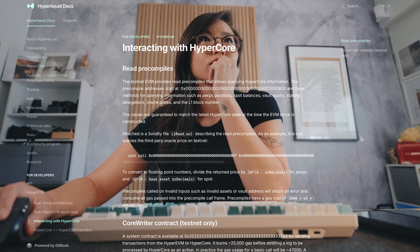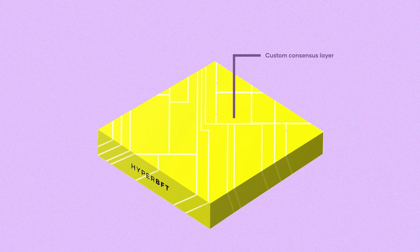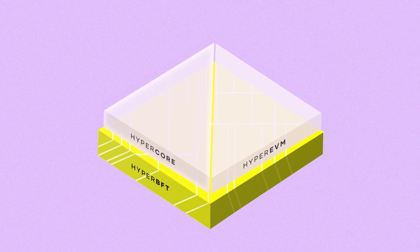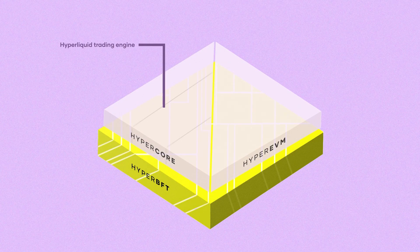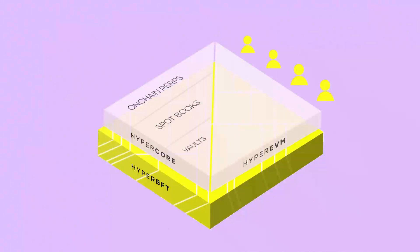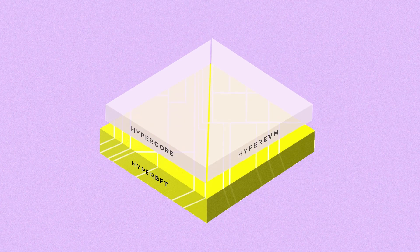To understand why Core Writer matters, we need to zoom out and look at HyperLiquid's architecture. At the base layer you have HyperBFT, the custom consensus layer. Built on top of it are two execution environments: HyperCore and HyperEVM. HyperCore is the high-performance trading engine — the exchange everyone is familiar with, where on-chain perps, spot, and liquidity vaults live. HyperEVM is the smart contract layer where DeFi protocols are built. What makes HyperLiquid unique is that HyperCore and HyperEVM share the same state, meaning both environments can see the same data in real time.